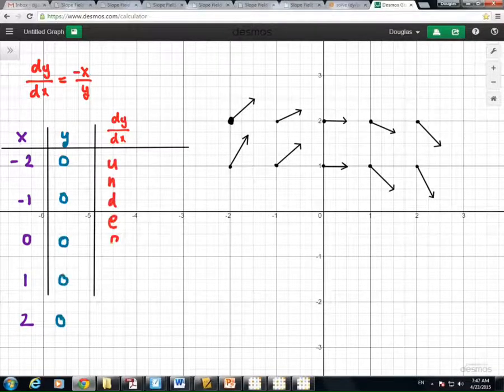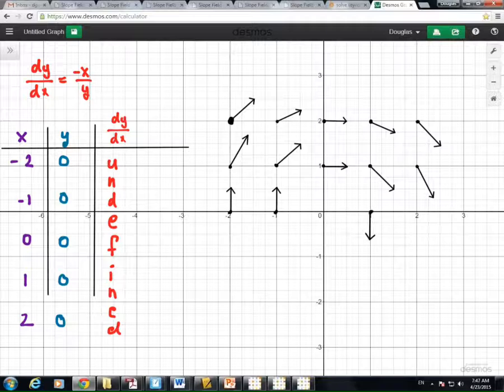And if we were to do another set for y equals 0, we'll see even more, well, all of these are undefined, which when we look at circles, the circles have vertical tangent slopes, or vertical tangent lines when they cross the x-axis. So that would explain why slopes are undefined when the initial condition has a y of 0.